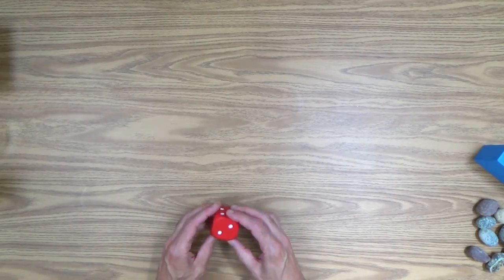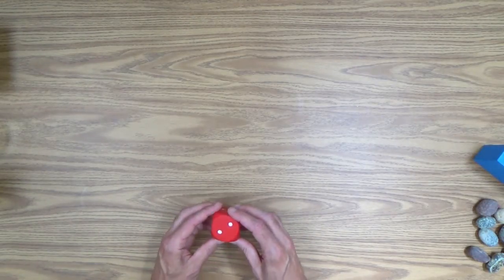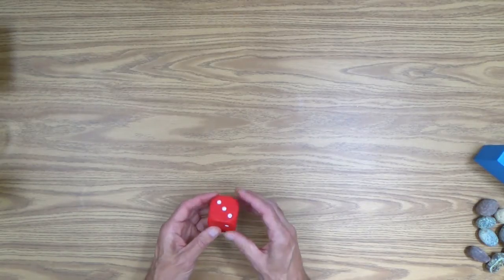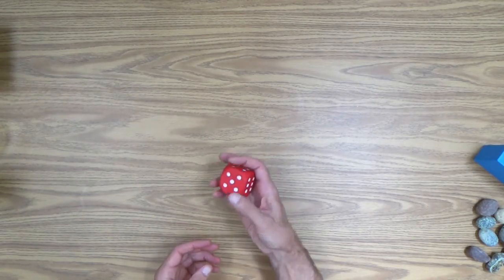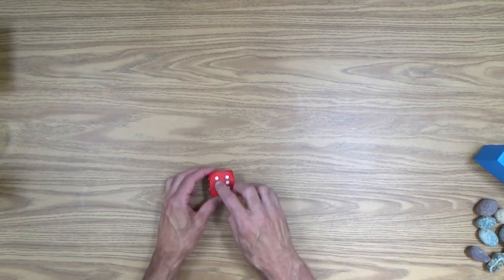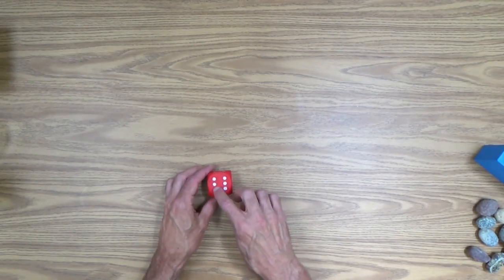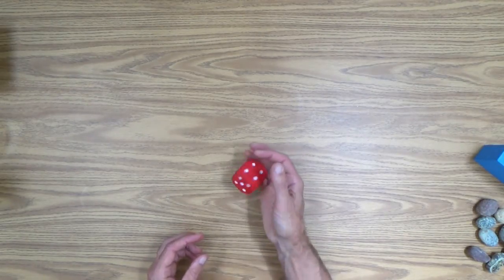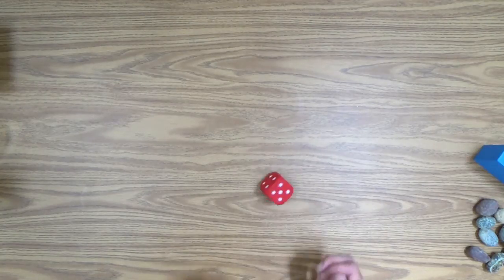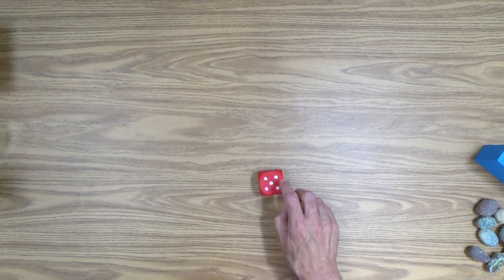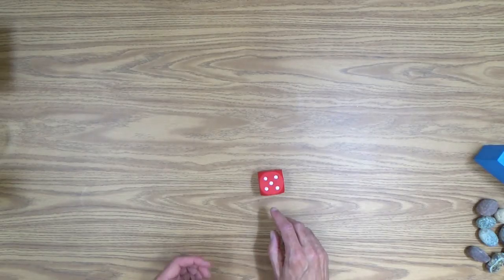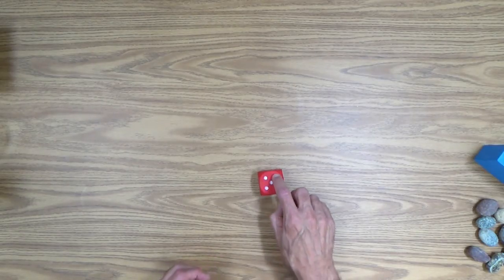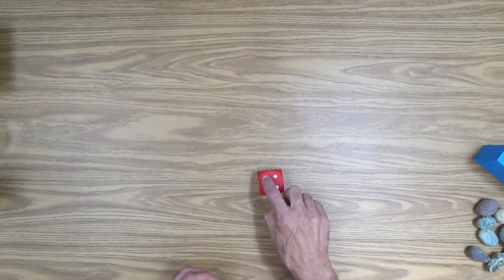Another thing you could teach him or her to do is how to read a die. So you won't need the pair of dice, you only need one die. And of course it should be a big one so they can actually put their finger on and count the dots. You could just have her roll it and have her count. And once again, it's touch counting. One, two, three, four, five.